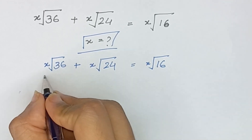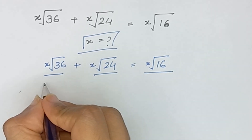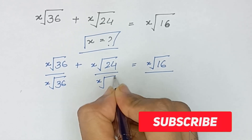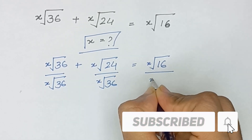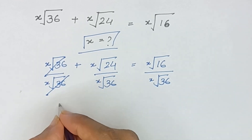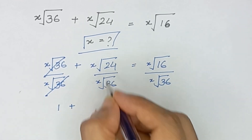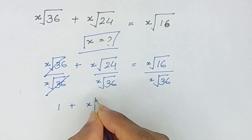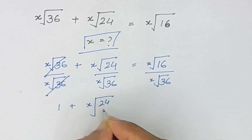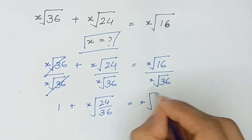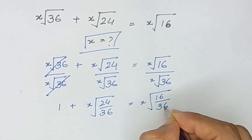We will divide the whole equation by x-root of 36. It will be cancelled out and it will become 1 plus x-root of 24 divided by 36, is equal to x-root of 16 divided by 36.